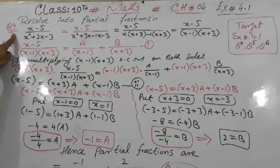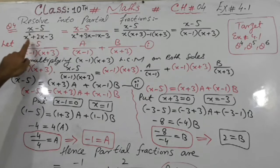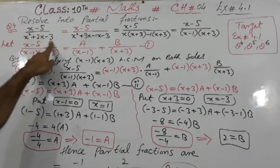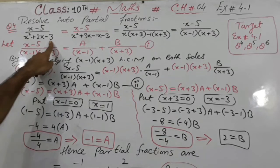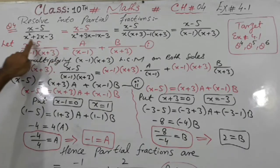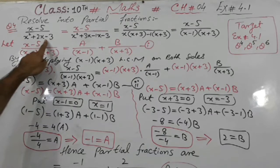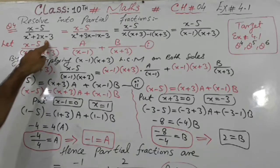Question number 4 is x minus 5 over x squared plus 2x minus 3. We have exercise 4.1, where we need two brackets in single power.